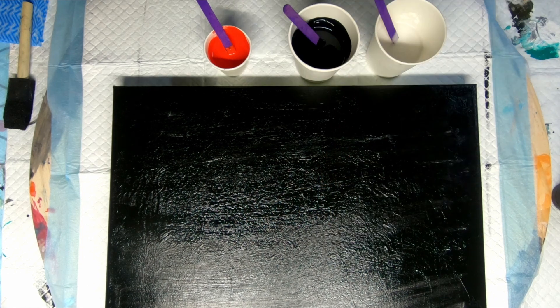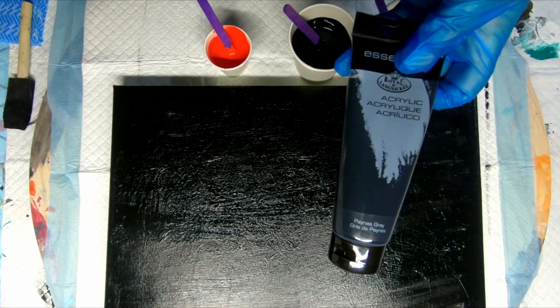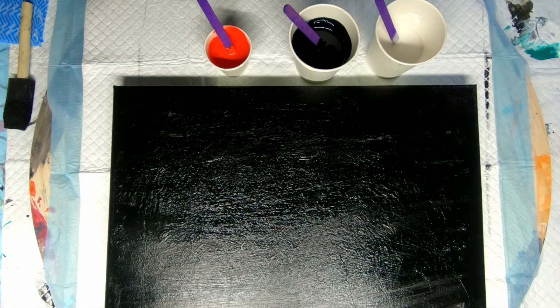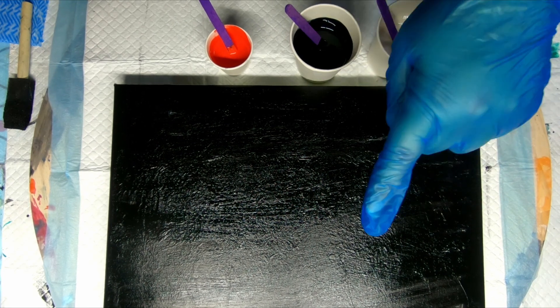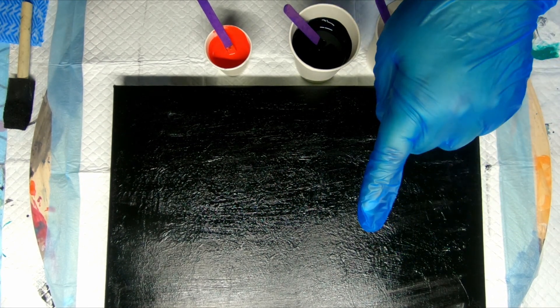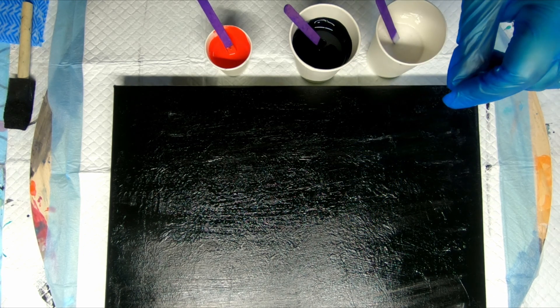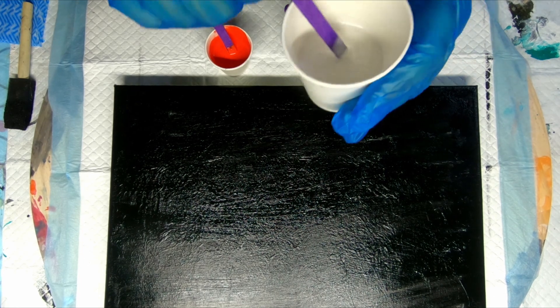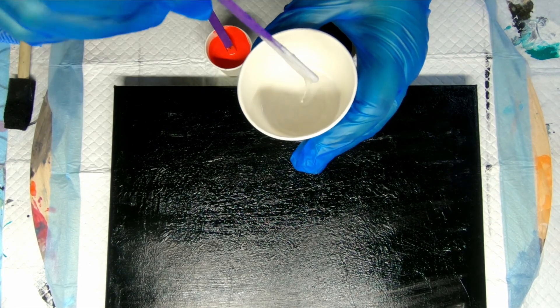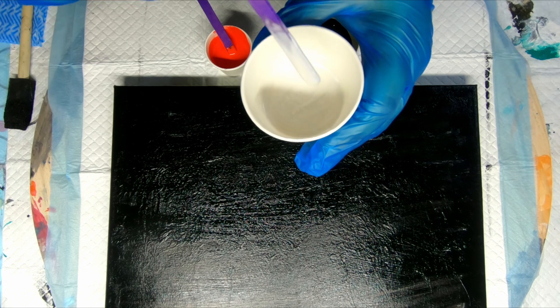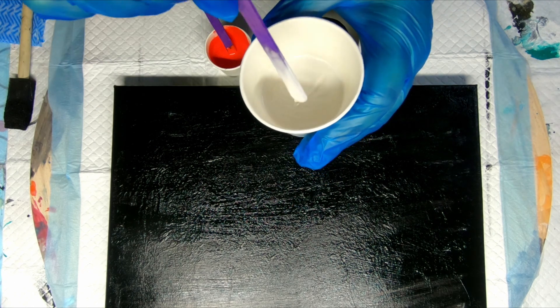and Payne's gray. My paints today are mixed one part paint, one part Australian Floetrol, a squirt of my global pouring medium, and then water to consistency. My paints are quite thin because we are doing a swipe today.